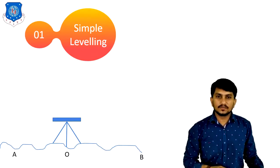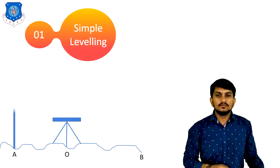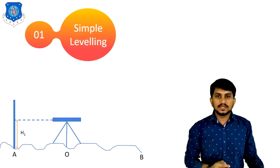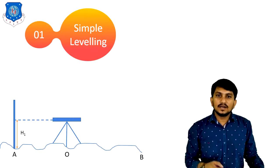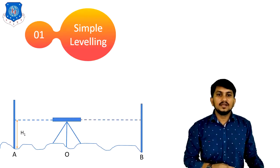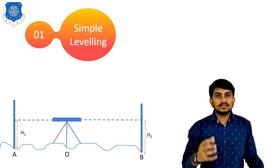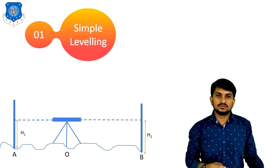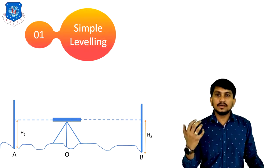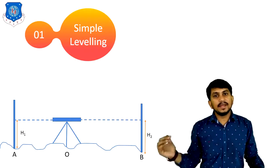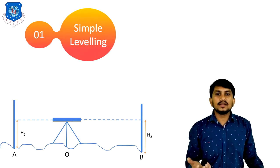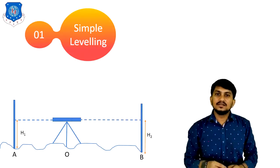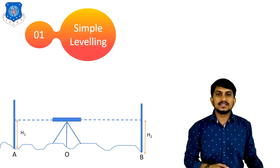O is the setup of the dumpy level. After setting up the instrument, we will take our first reading at station number A. This reading is called H1. After taking the reading at station number A, we will take our reading at station number B, like this. This reading is H2. To find out the level difference between two points A and B, we calculate the difference between H1 and H2. The difference H2 minus H1 gives the level difference between A and B. This is called simple leveling, where only one setup is required and the setup is at the center position between the two points.